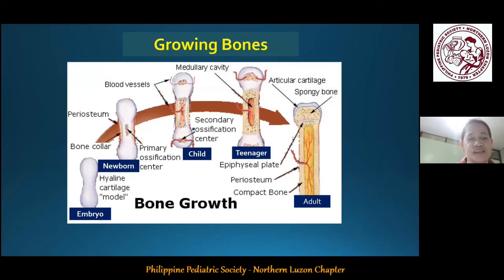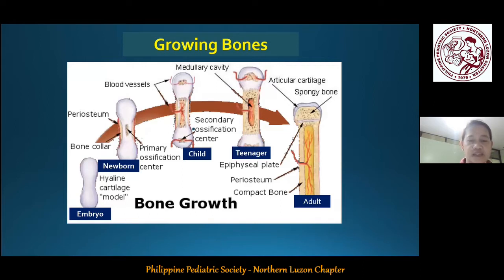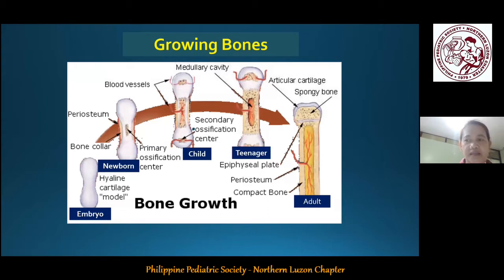The human skeleton undergoes several changes in size and shape during the different stages of life. Bone appears in the six-week-old embryo and growth of bone continues in adulthood. But it is very important to note that during the period of childhood and adolescence, the rapid and significant longitudinal bone growth, areal bone expansion, and bone mineral accrual materialize. Ninety percent of the peak bone mass is achieved in late teenage, and the amount of bone mass reached by this age predicts bone mineral density in adulthood.